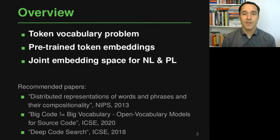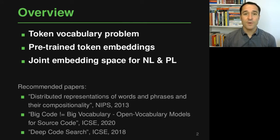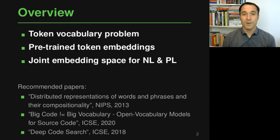Here's an overview of what we'll cover in this module. First, I will explain the token vocabulary problem — essentially about the many tokens that exist in source code. Then we look into a couple of approaches for addressing this problem, one of which is to use pre-trained token embeddings, an approach that has been very popular in natural language processing and also shows to be pretty effective in modeling source code. Then in the third part we look into learning embeddings that cover both natural language information and programming language information, which is useful to reason about natural language artifacts associated with source code such as comments or queries typed into a search engine to find code snippets.